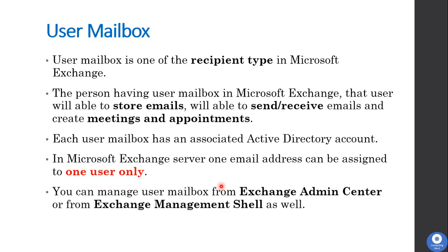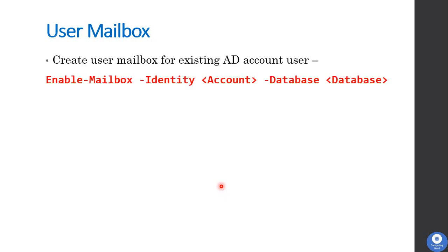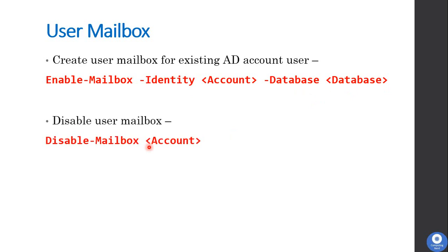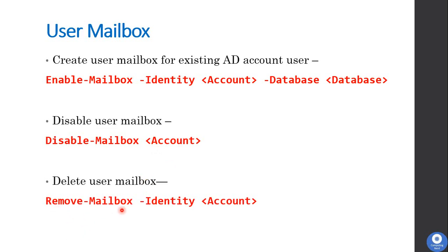You can manage user mailboxes from the Exchange Admin Center or from Exchange Management Shell. To create a new mailbox for an existing Active Directory user, run: Enable-Mailbox -Identity, providing the email address and the database where the mailbox needs to be stored. To disable the mailbox, run: Disable-Mailbox and mention the email address or alias. To delete the user mailbox, run: Remove-Mailbox -Identity and provide the email address.